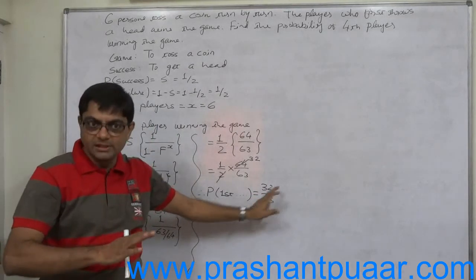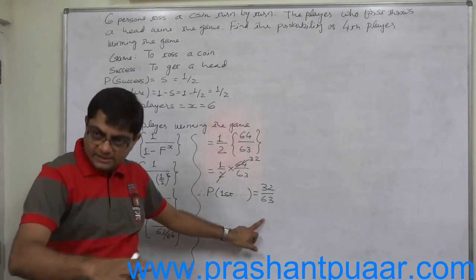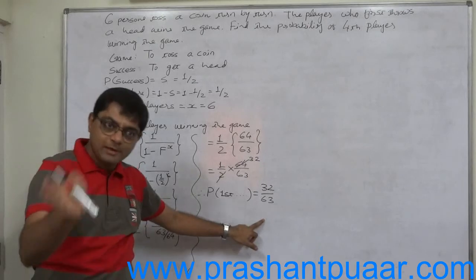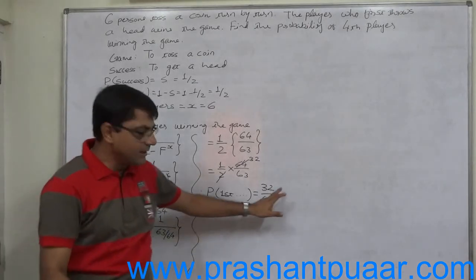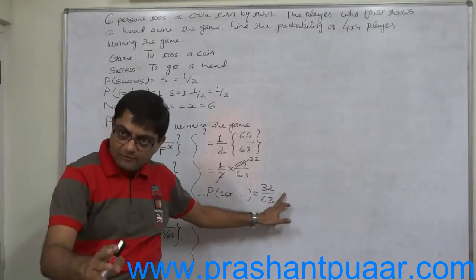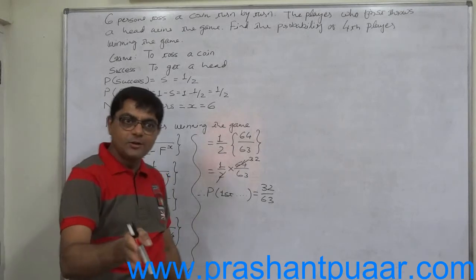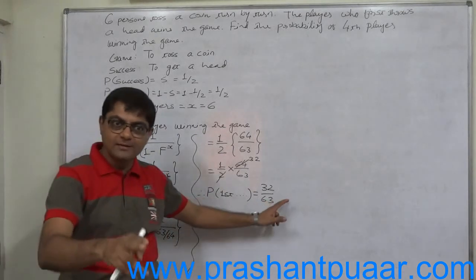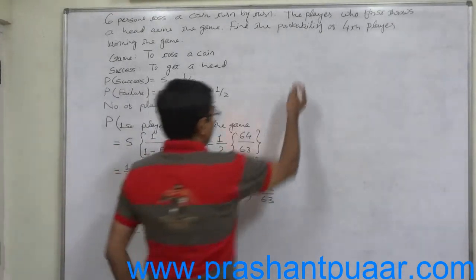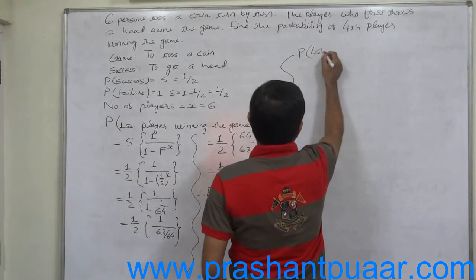This is actually a binary or binomial case. The probability of the second player will be 32/2, that means 16/63. The probability of the third player will be 16/2, which is 8/63. The probability of the fourth player will be 8/2, that means 4/63. The probability of the fifth player will be 4/2, which is 2/63, and the probability of the sixth player will be 2/2, that means 1/63.